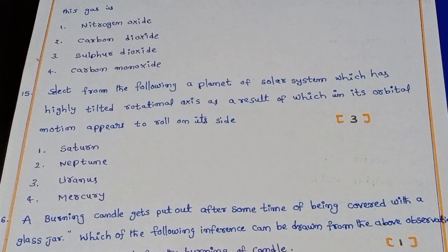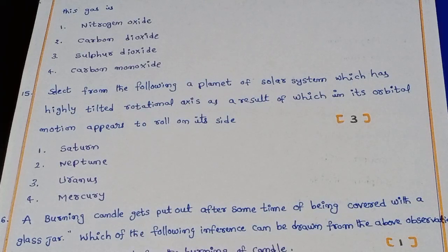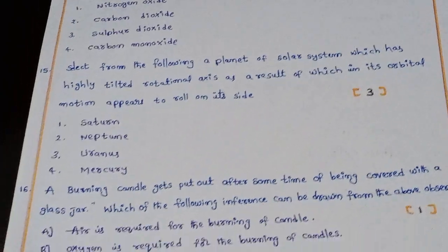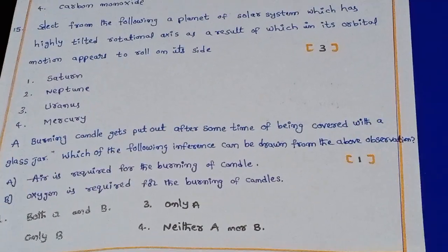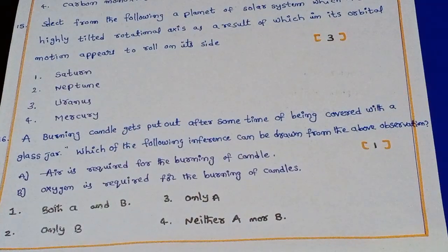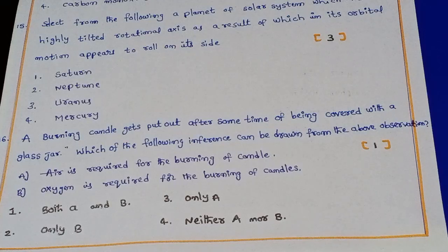Question 15: Select from the following a planet of the solar system which has a highly tilted rotational axis, as a result of which in its orbital motion it appears to roll on its side. The right answer is Uranus.